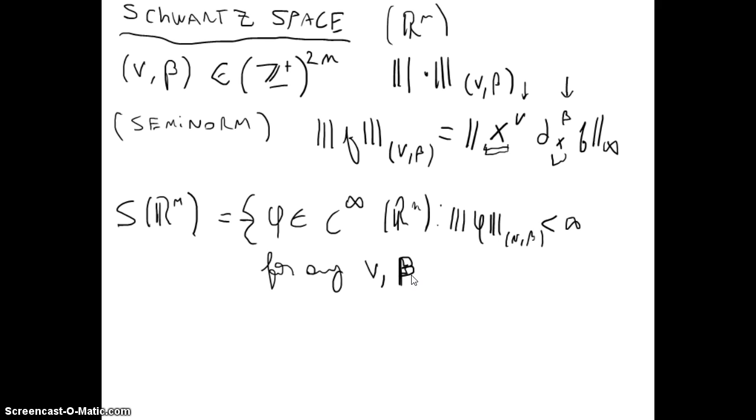Such that the norm ρ_{ν,β}(f) is less than infinity for any ν and β, where ν and β are integer vectors of R^n with n components. This will be the Schwarz space.